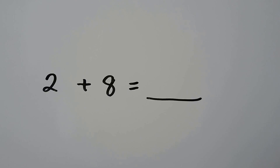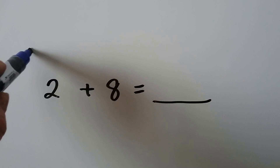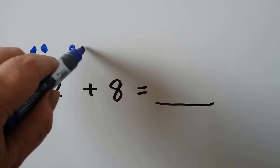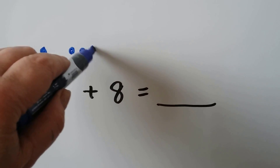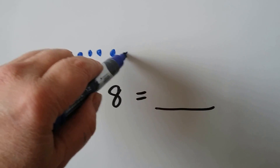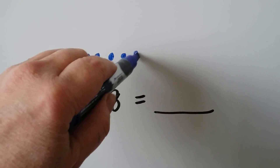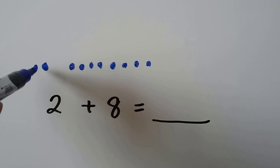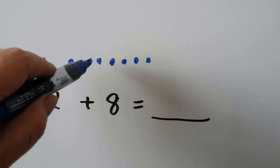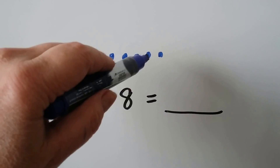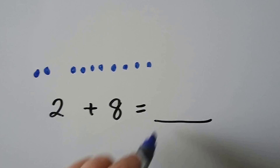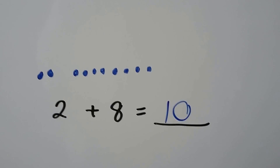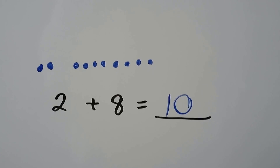Two plus eight. Two dots plus eight dots: one, two, three, four, five, six, seven, eight, nine, ten. Two plus eight is equal to ten.